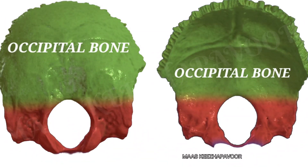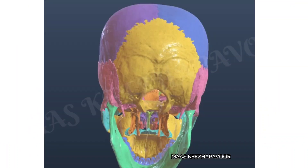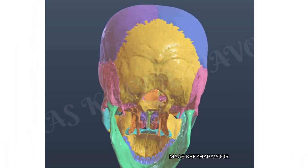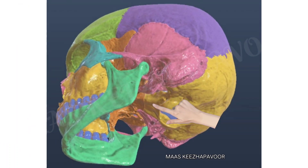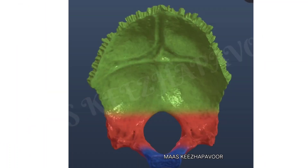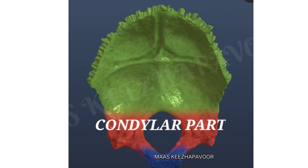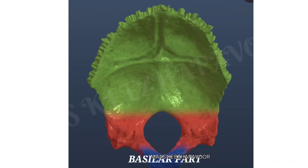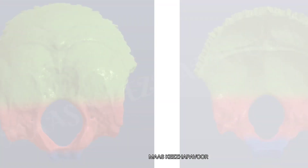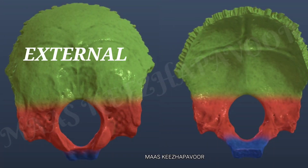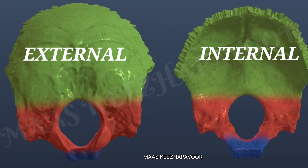The Occipital Bone is an unpaired bone. It forms the posterior part of the vault and base of the cranial cavity. It has three parts: squamous part, condylar part, and basilar part. The squamous part has external and internal surfaces.